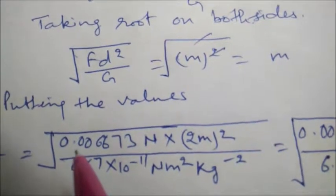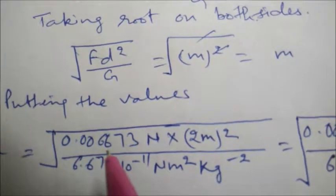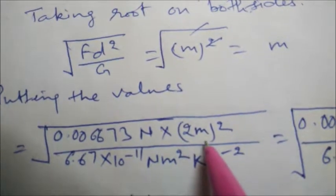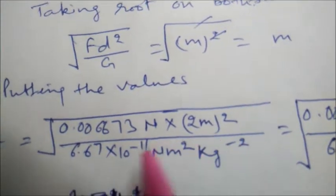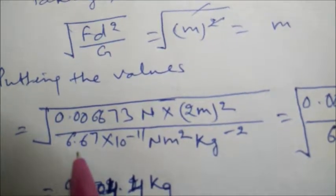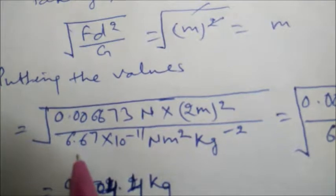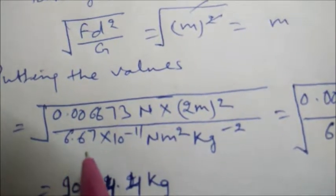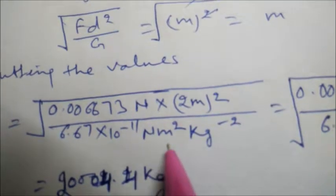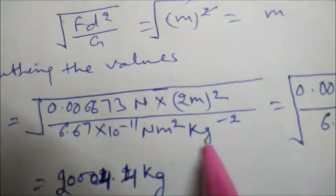Force is 0.006673 Newton. Distance is 2 meters, whole squared. Gravitational constant is given where the value is always given. It is 6.67 times 10 to the power minus 11 Newton meter square per kilogram square.